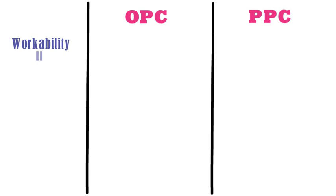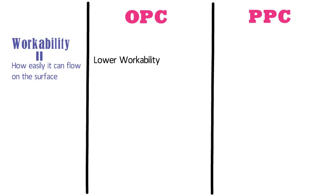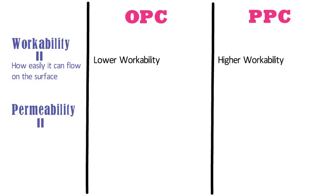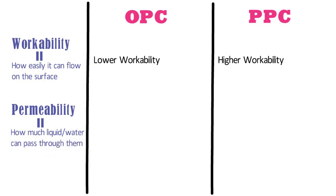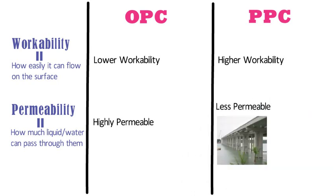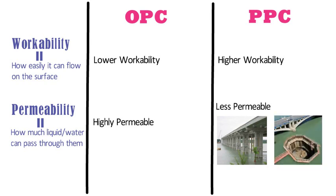Workability means how easily concrete can flow on the surface. Concrete made using OPC cement has lower workability, whereas concrete made using PPC cement has higher workability. Permeability is the quality of a substance to measure how much liquid or water can pass through it. Due to the absence of pozzolanic materials, OPC is highly permeable to water, whereas PPC is less permeable. Hence PPC is suitable for structures such as bridge piers or foundations where a waterproof structure is recommended.